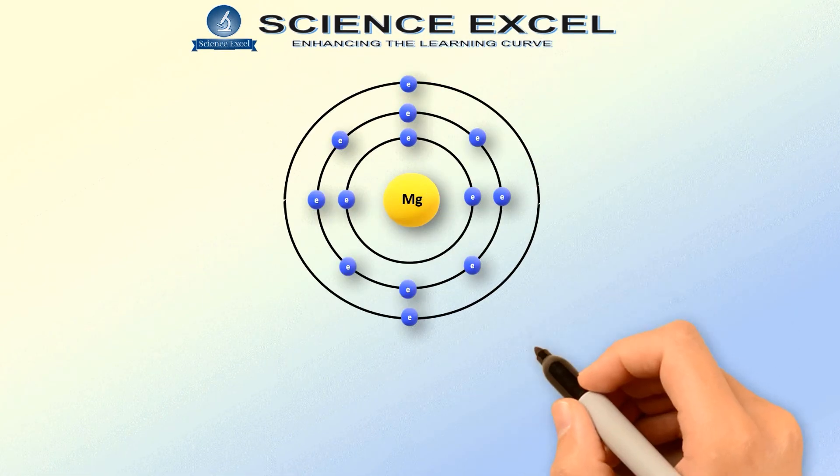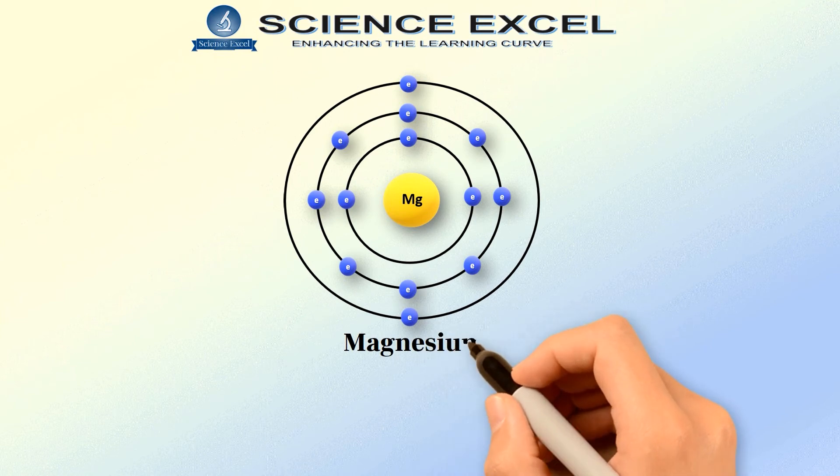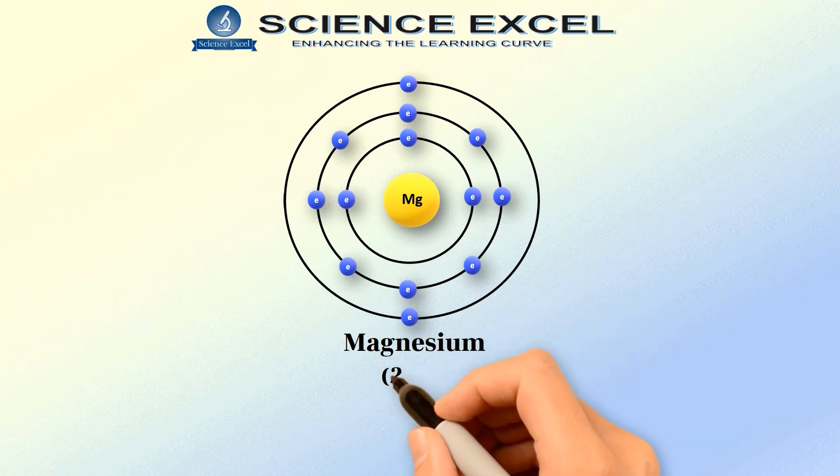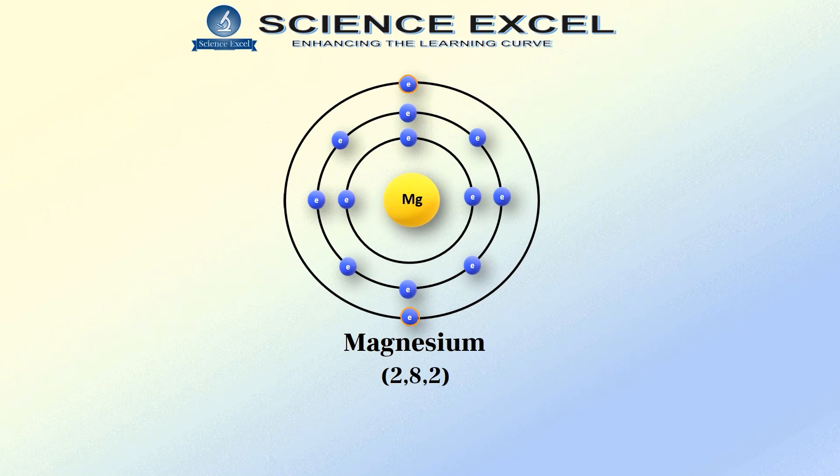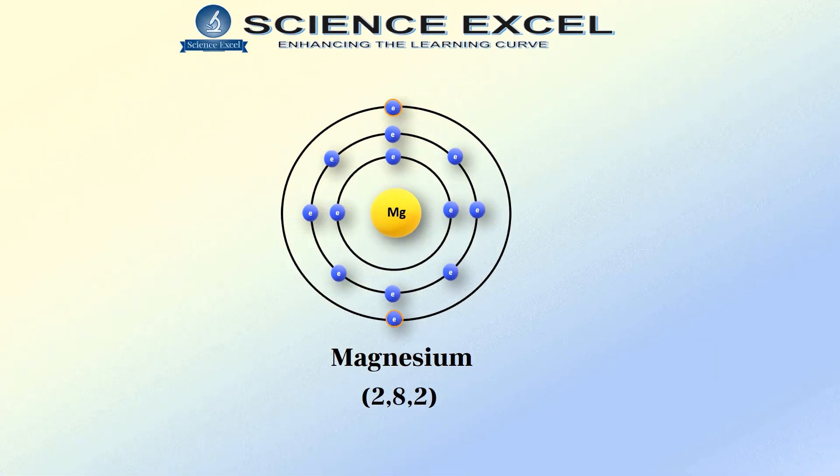Now, tell me what will be the valency of magnesium? The electronic configuration of magnesium is 2, 8, 2. This means that it has 2 electrons in its outermost shell. So, how many electrons are needed to complete the octet? Yes, you are absolutely right if you said 6 electrons. But which atom will give away 6 electrons so easily?